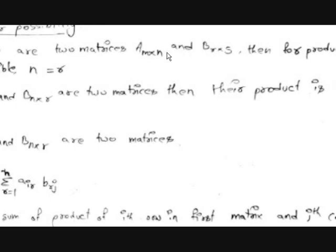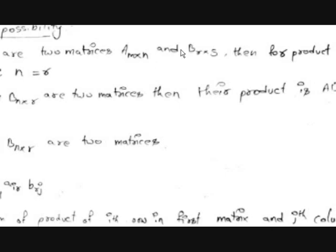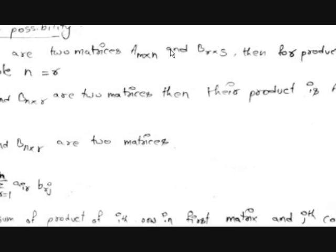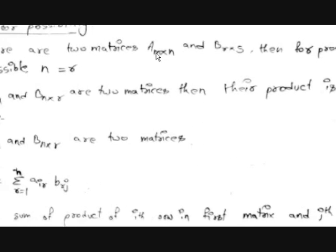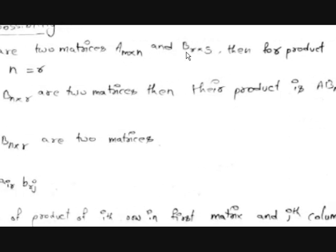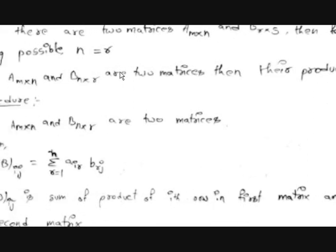From this, a property of the product of two matrices arises: AB will not be equal to BA. It may be possible that both are equal if both matrices are square matrices of the same order, like 2 by 2 or 3 by 3. But first let's see the procedure, and then we will understand whether those are equal or not.